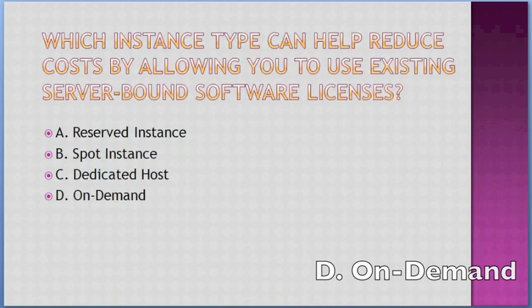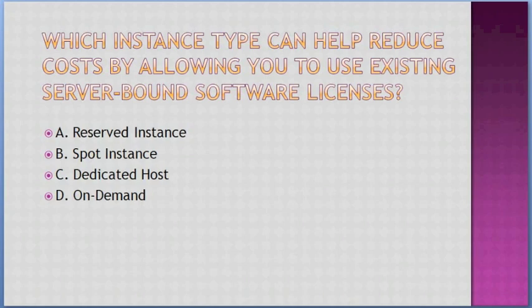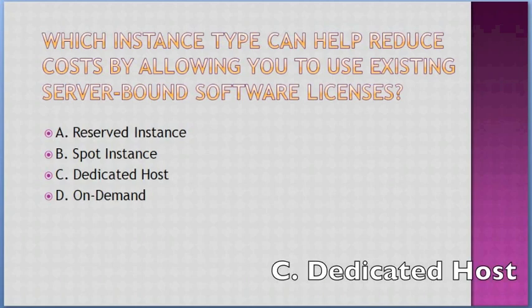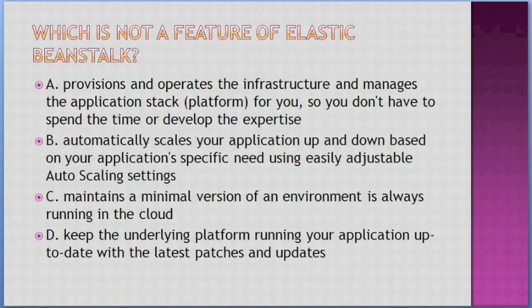Which instance type can help reduce cost by allowing you to use existing server-bound software licenses? Options: A. Reserved Instance, B. Spot Instance, C. Dedicated Host, D. On-Demand. Answer: C — Dedicated Host.